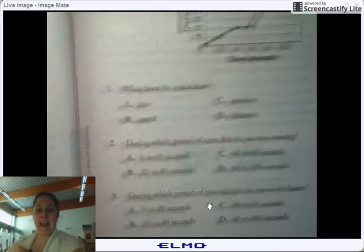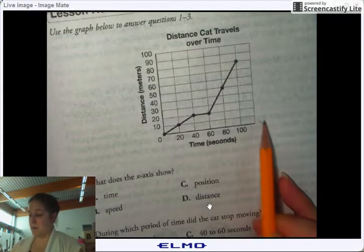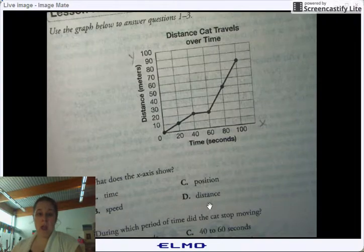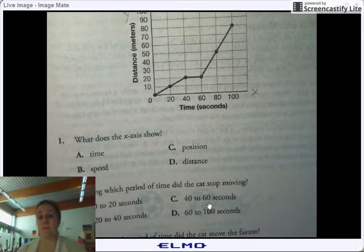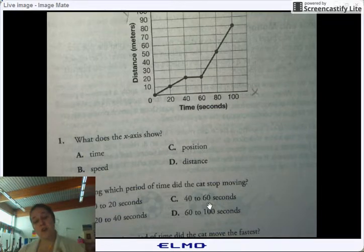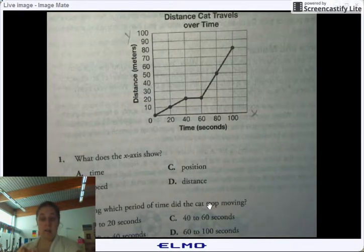What does the x-axis show? Remember, which one's your x, which one's your y. So the x-axis is either going to show your time, is it going to show your speed, is it going to show your position, or is it going to show your distance? So if you'll make a decision based on your up here, you can be able to answer that question.